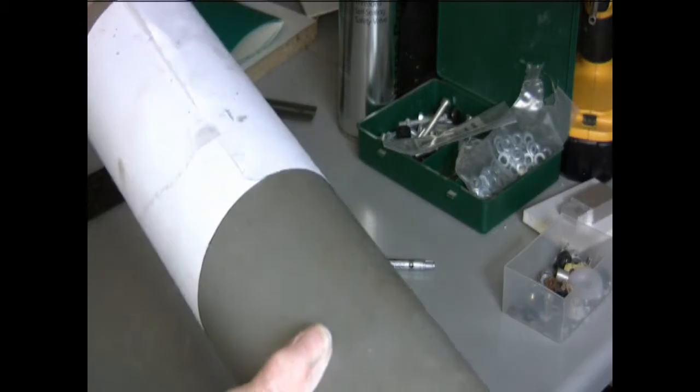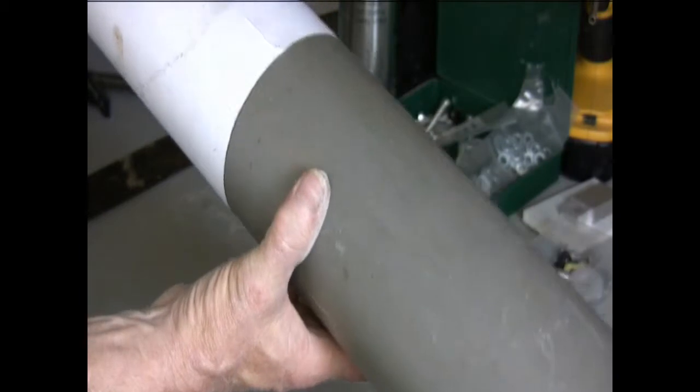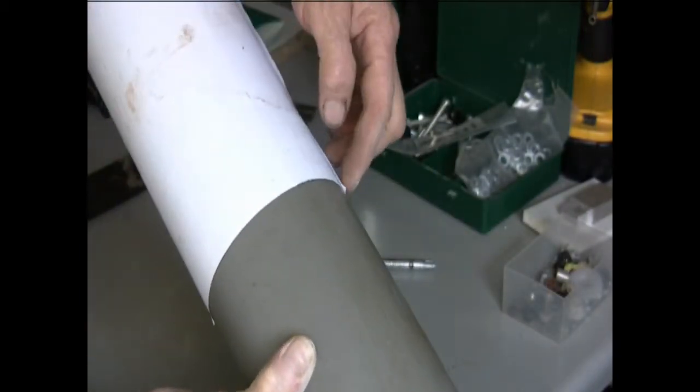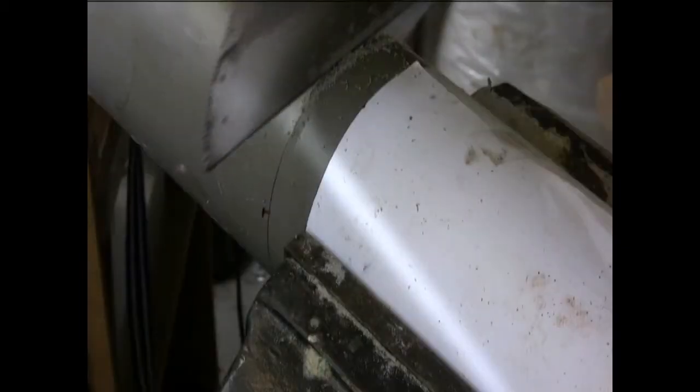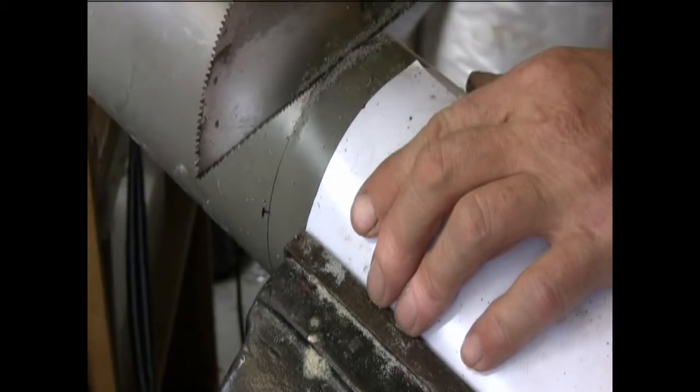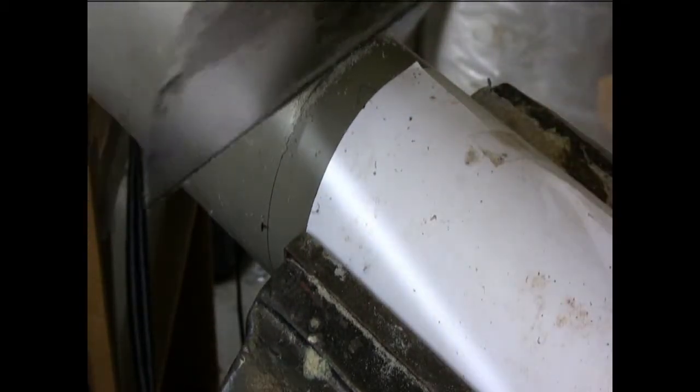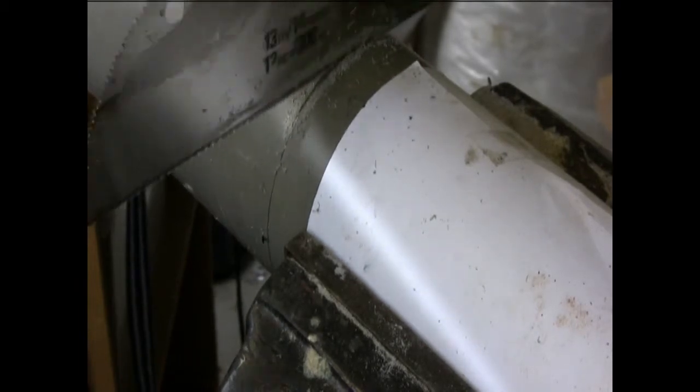Then we needed to cut the pipe or cylinder to length. And the best way I've found of doing this is wrapping a piece of paper around, sellotaping it where they join up. And that gives you a very accurate line to work to. Then I held it lightly in the vice and cut it to length using a very fine-toothed saw and then sanded it square.